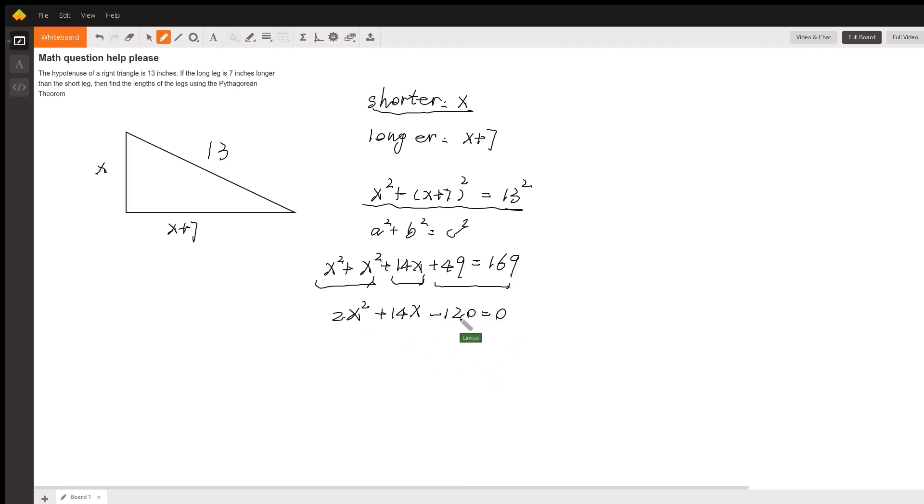So we can divide the whole equation by 2: x squared plus 7x minus 60 is equal to zero. We can see 60 is equal to 12 times 5, that means we can factor this equation into x plus 12 times x minus 5 is equal to zero.